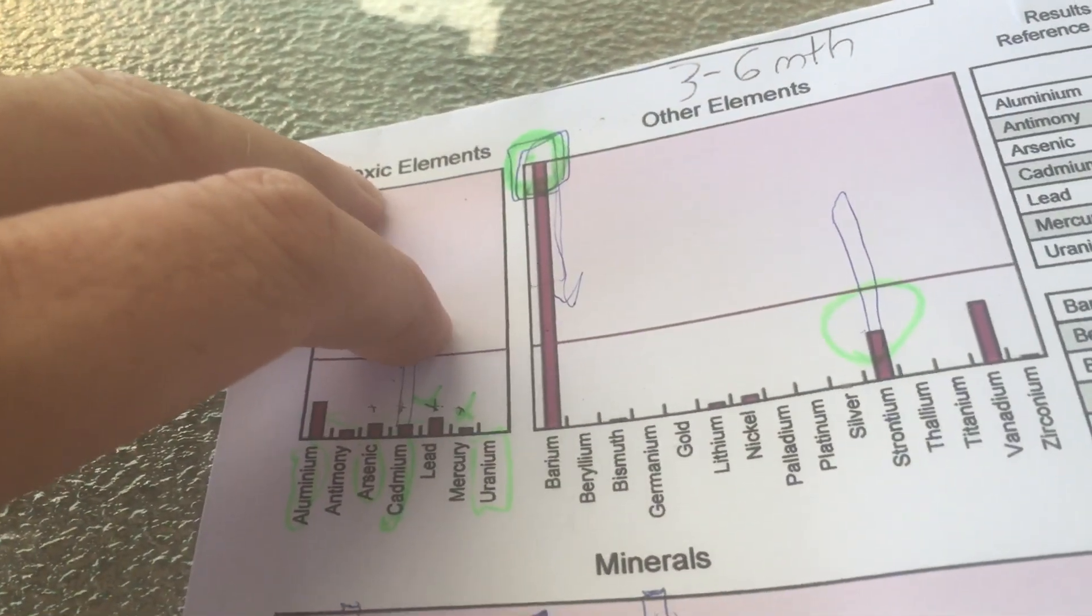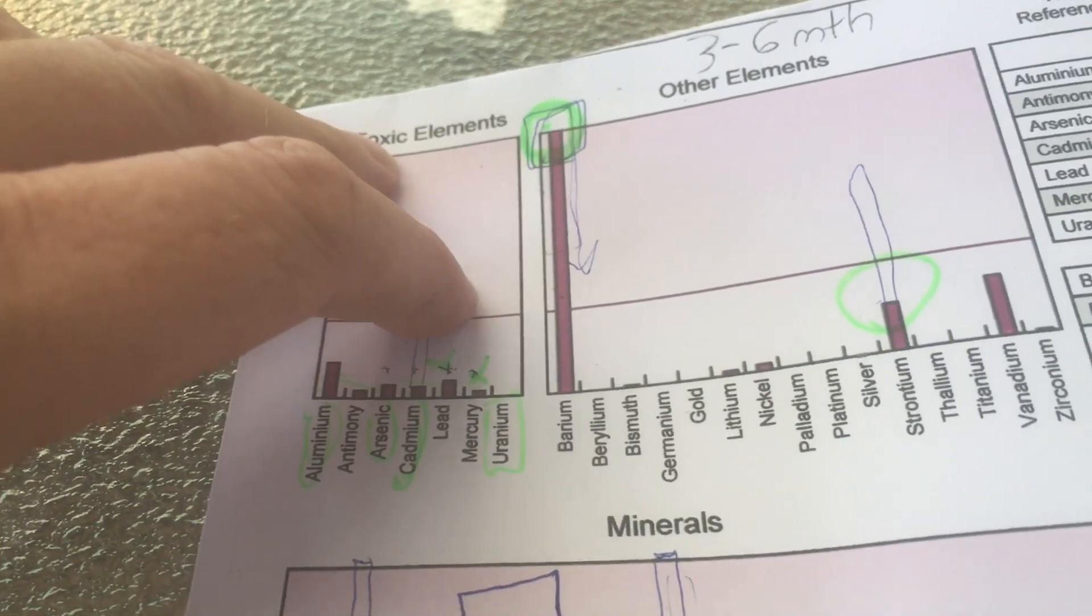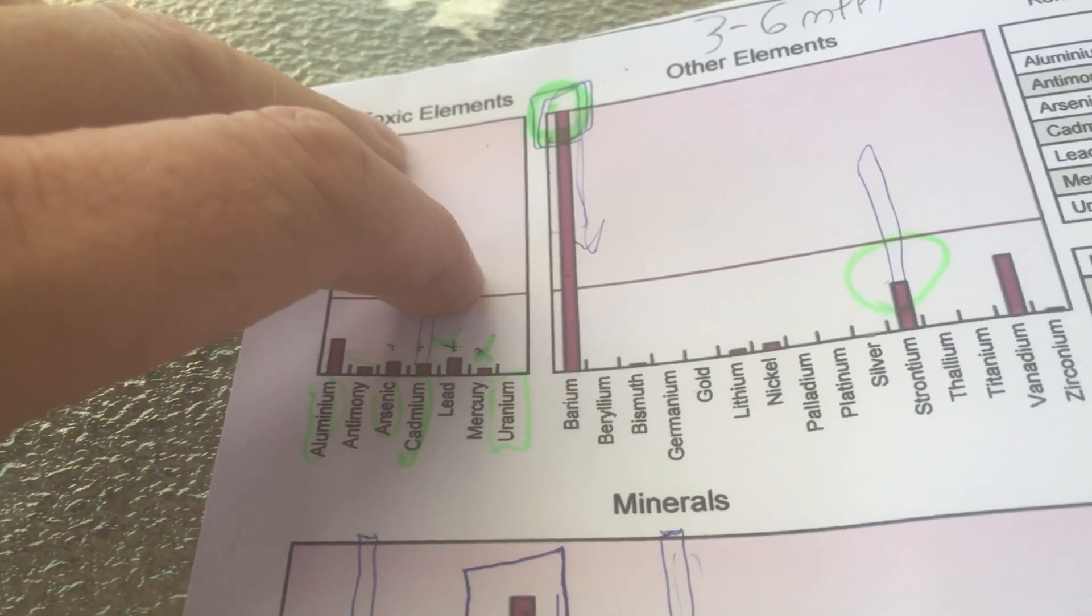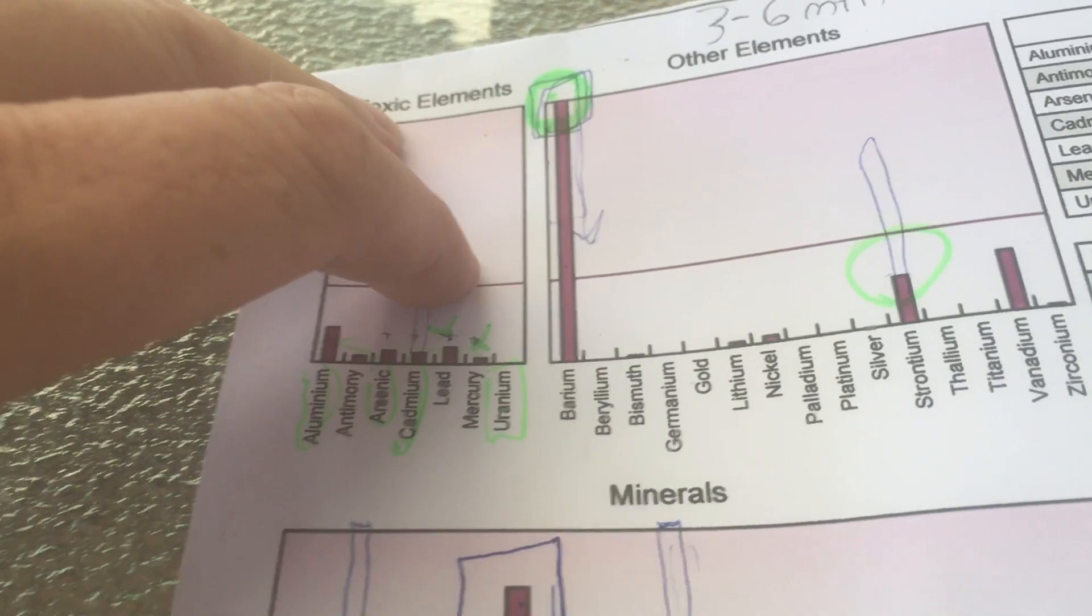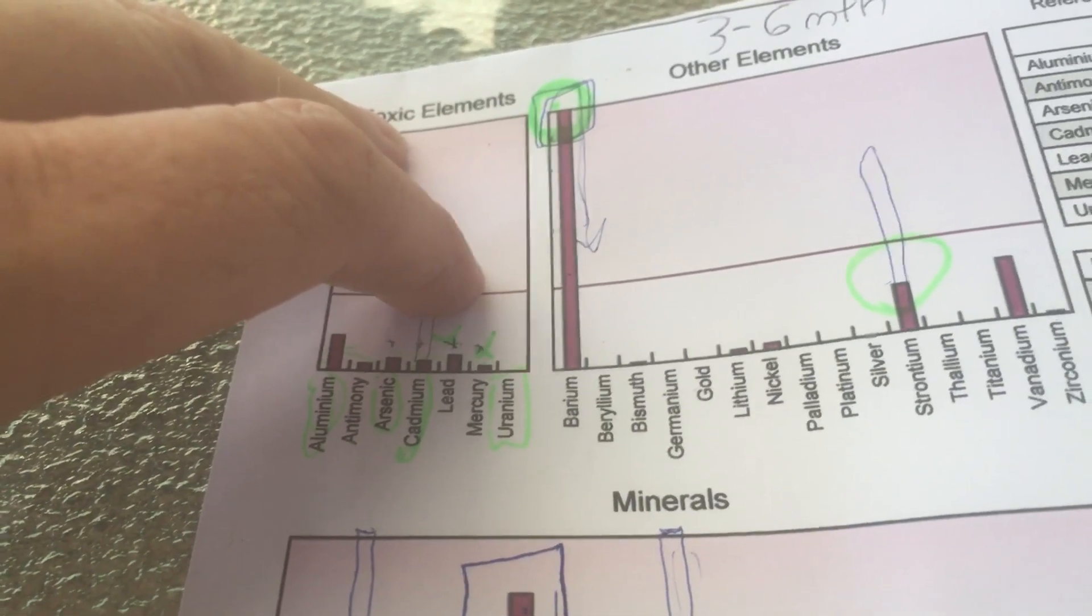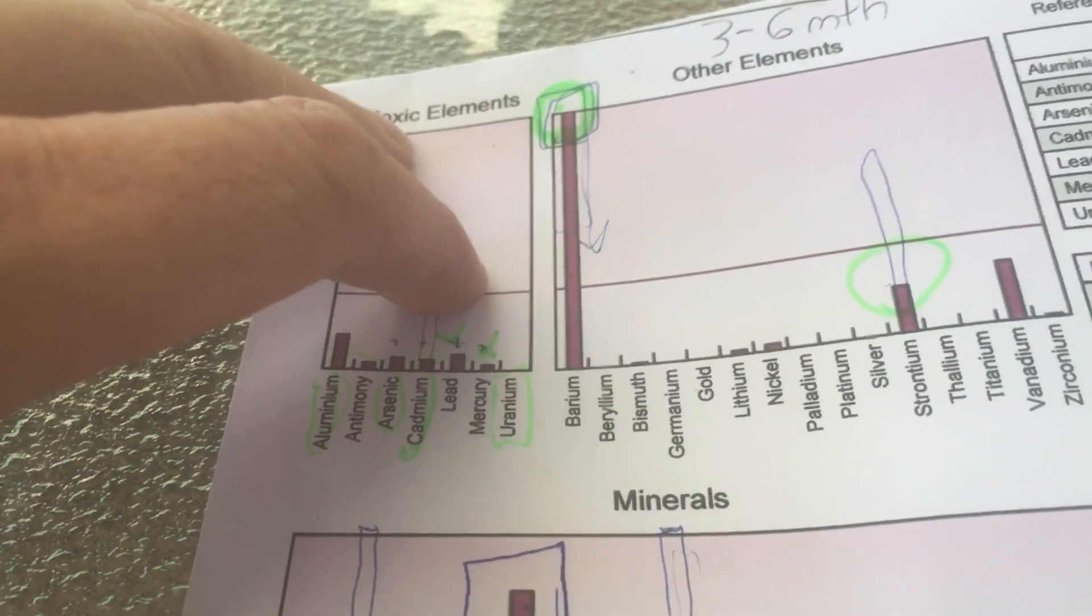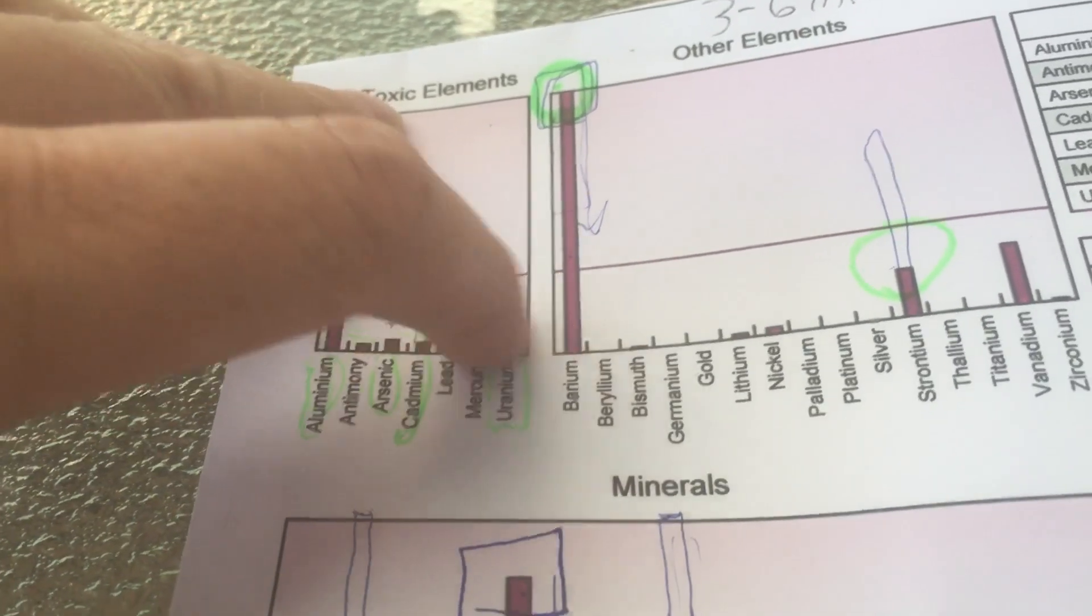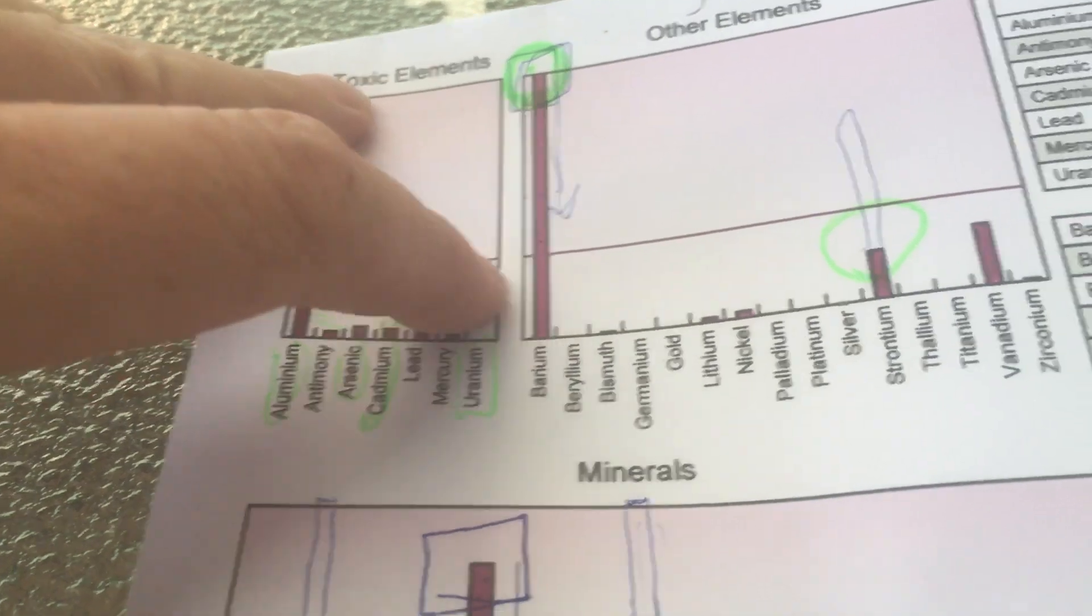What this hair analysis shows is just what is coming out of my body, so it doesn't really show the level that's in the body. It just shows you what your body is trying to cleanse itself of through the hair. So as expected, the